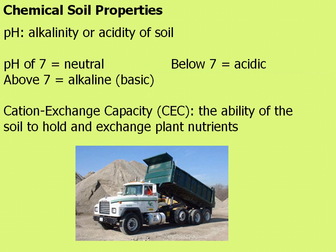A few of the major chemical soil properties: pH is the alkalinity or acidity of soil. A pH of 7 is neutral, anything below 7 is acidic, and anything above 7 is alkaline. Normal soils are typically near neutral, around 6.5 to 7. Soils over limestone beds can be higher, but here in Western North Carolina we have relatively acidic soils.